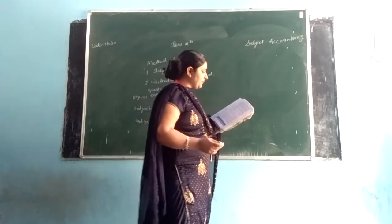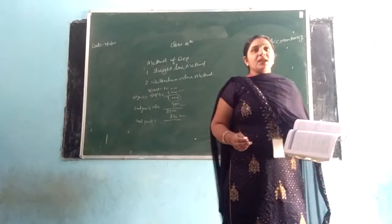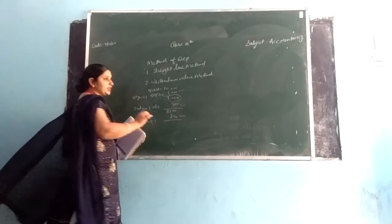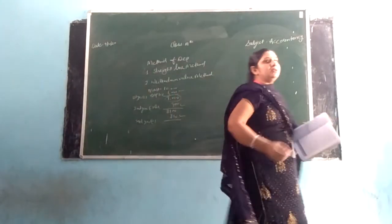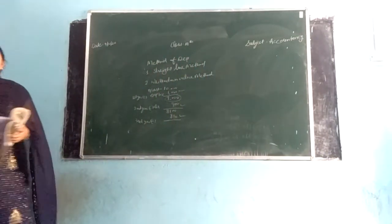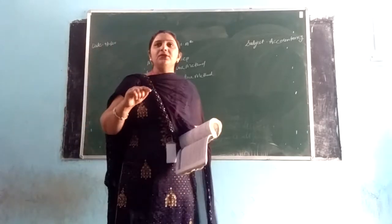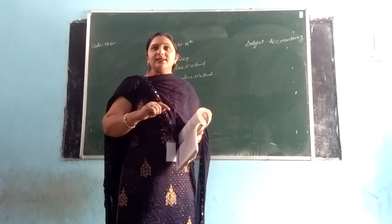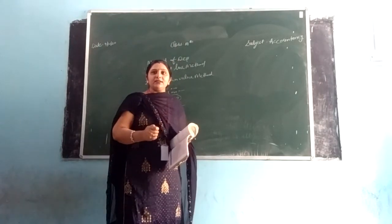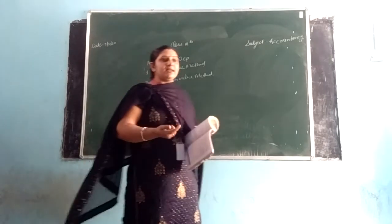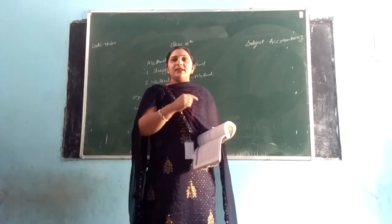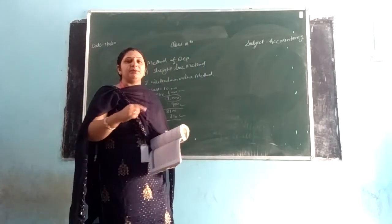The demerit is that the balance of asset never becomes zero. According to this method, because you have depreciation charged on the reducing balance, the asset will never reach zero. In straight line method the asset becomes zero, but in written down method, no asset becomes zero.